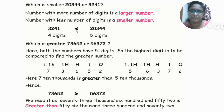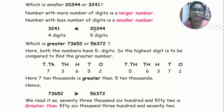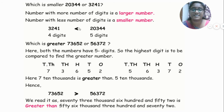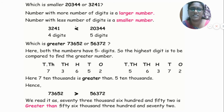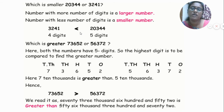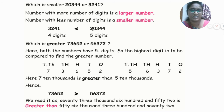The pointer area faces the smaller digit and the open wide area faces the larger digit — this is the lesser than symbol. So 3,241 is lesser than 20,344. Which is greater: 7,3652 or 5,6372? Both numbers have 5 digits, so we compare the highest place digit to find the greater number.